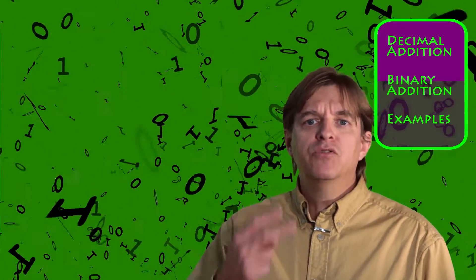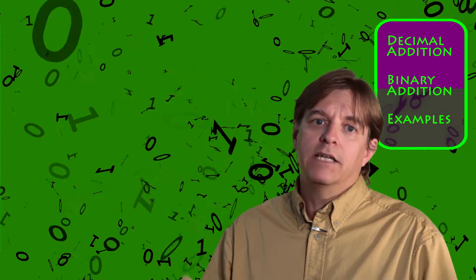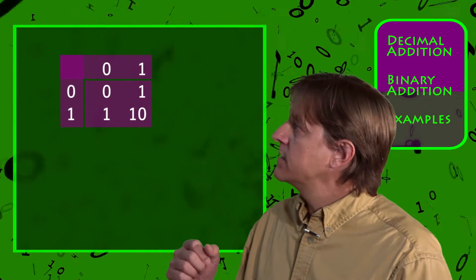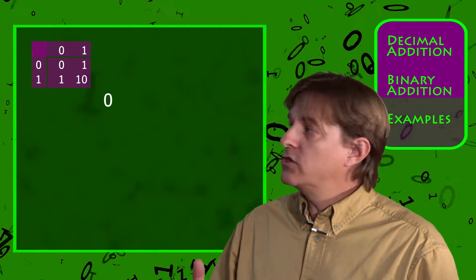Since there are only two numbers in the binary system, 0 and 1, the table only has two rows and two columns, and it looks like this. Or if you want to write it a slightly different way as equations, it looks like this.